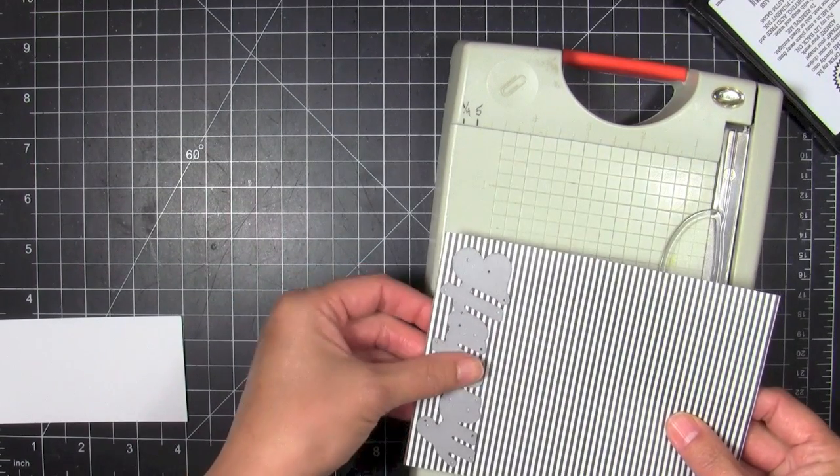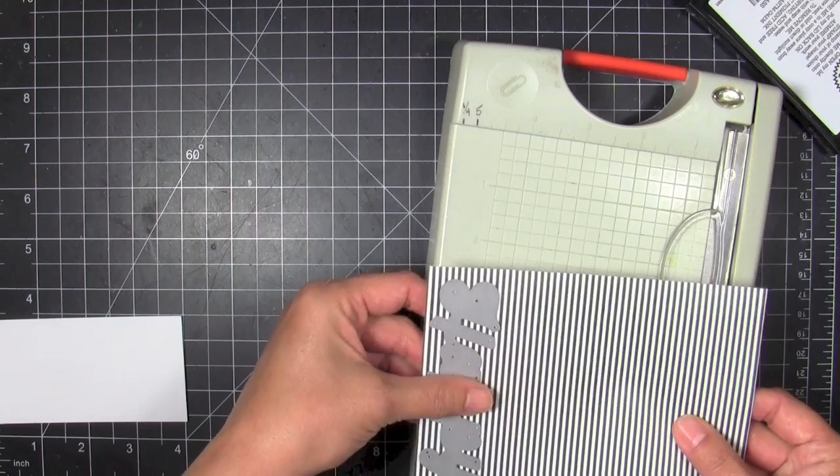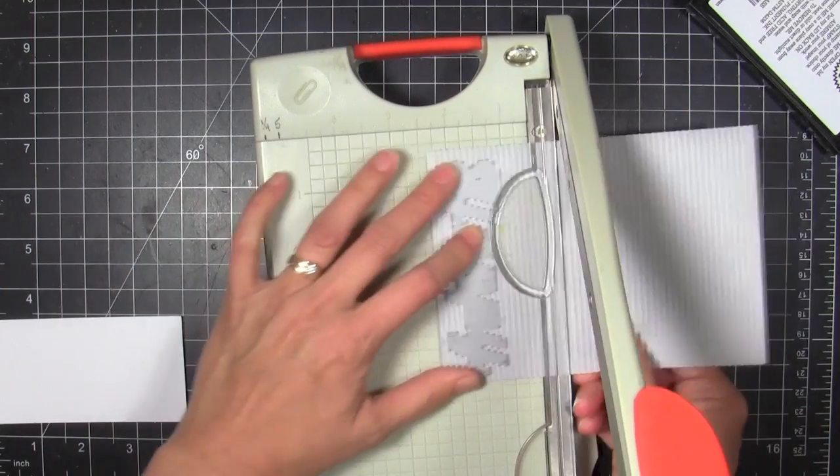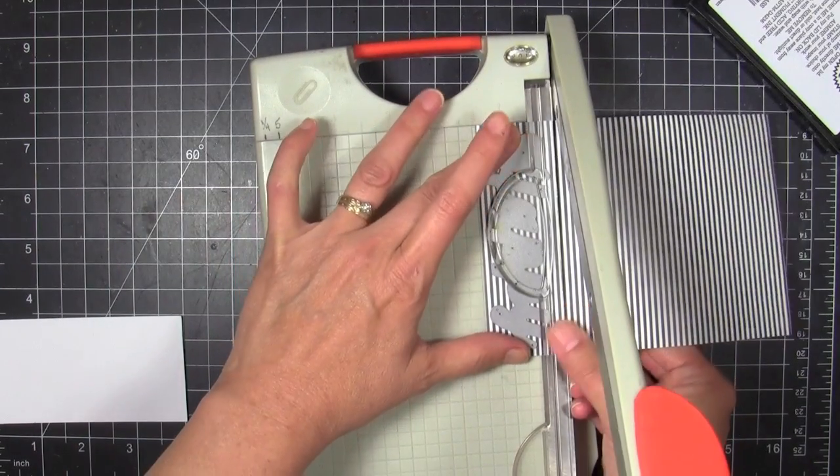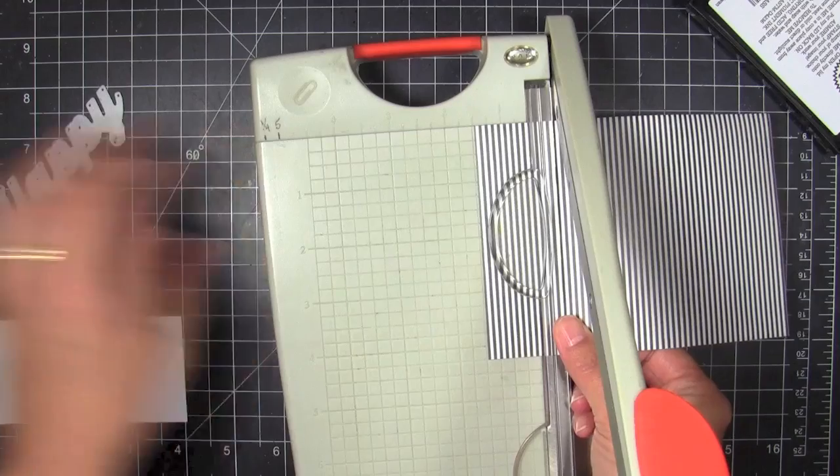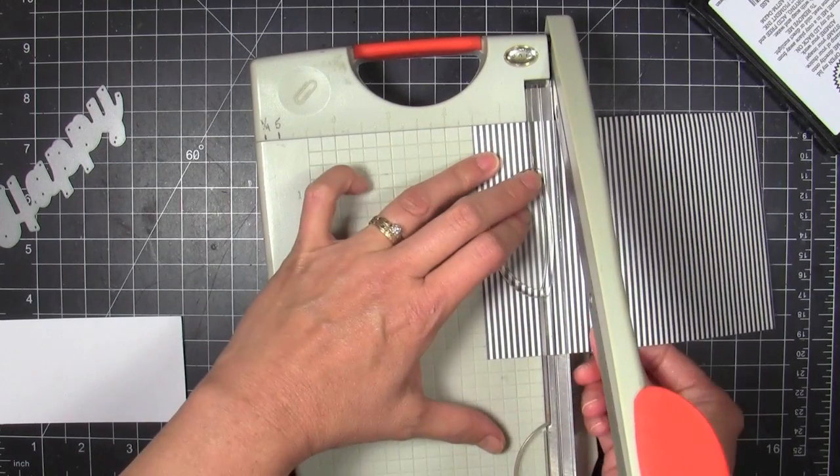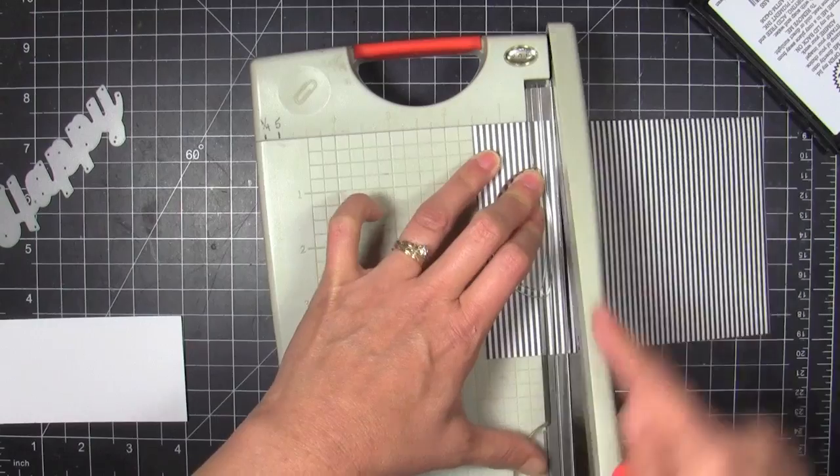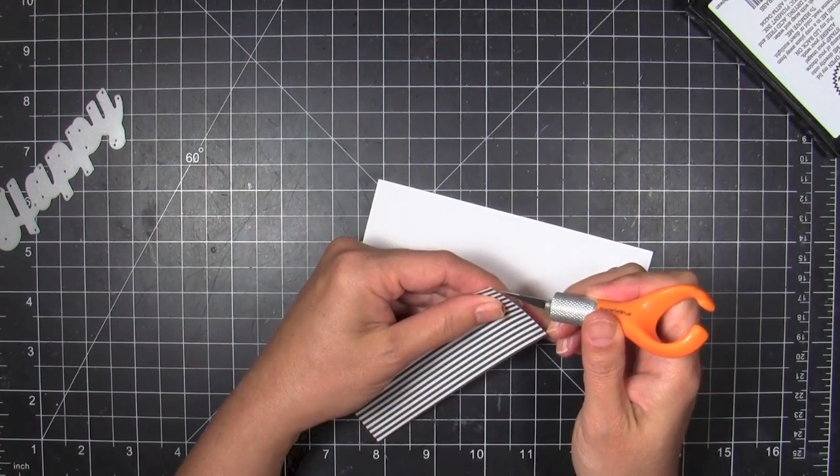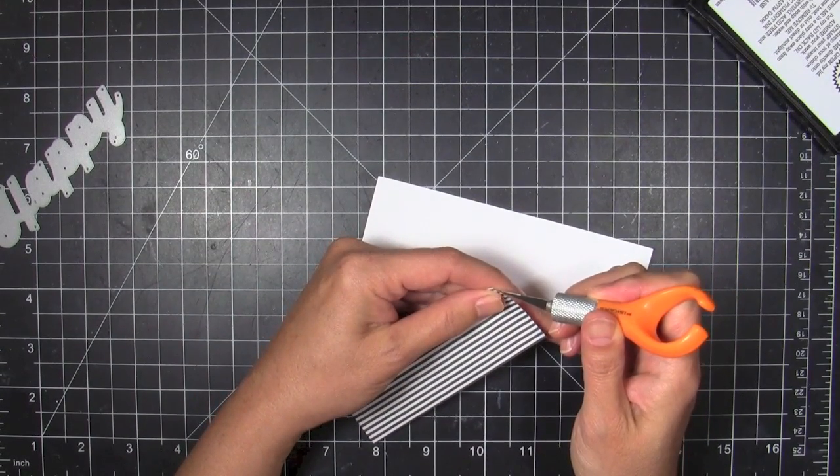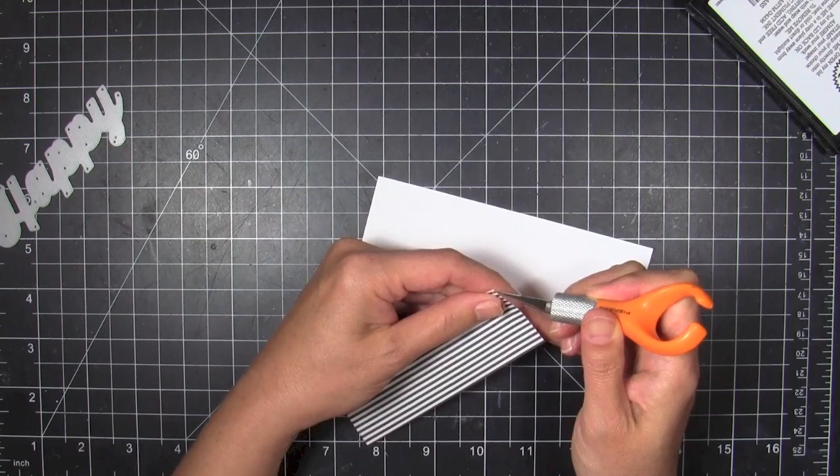Then I'm going to take this awesome happy die by My Favorite Things. It's got a nice thick width to the typeface. I'm just gonna go ahead and eyeball out a piece of my washi tape. This is a really skinny black and white stripe that I'm gonna use to mimic what I saw in the inspiration photograph.